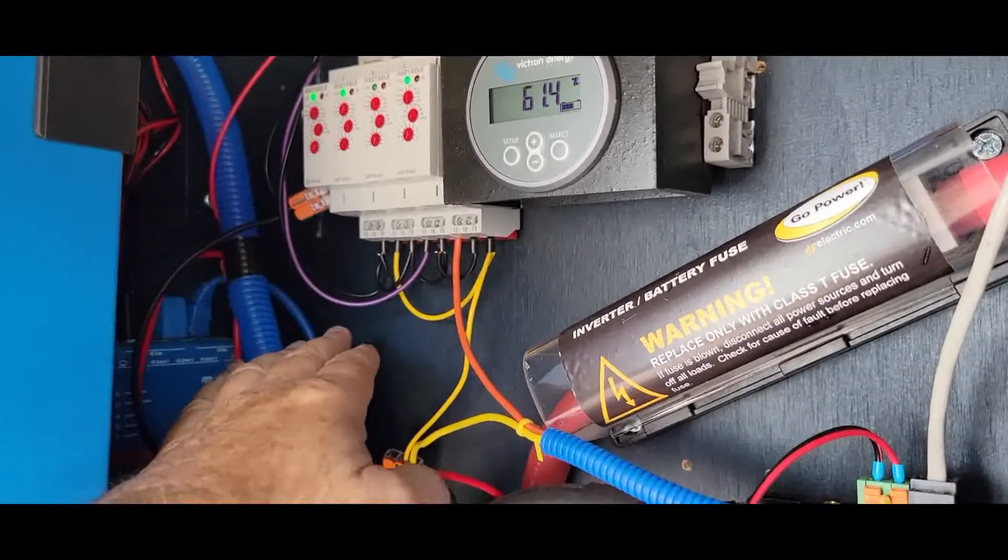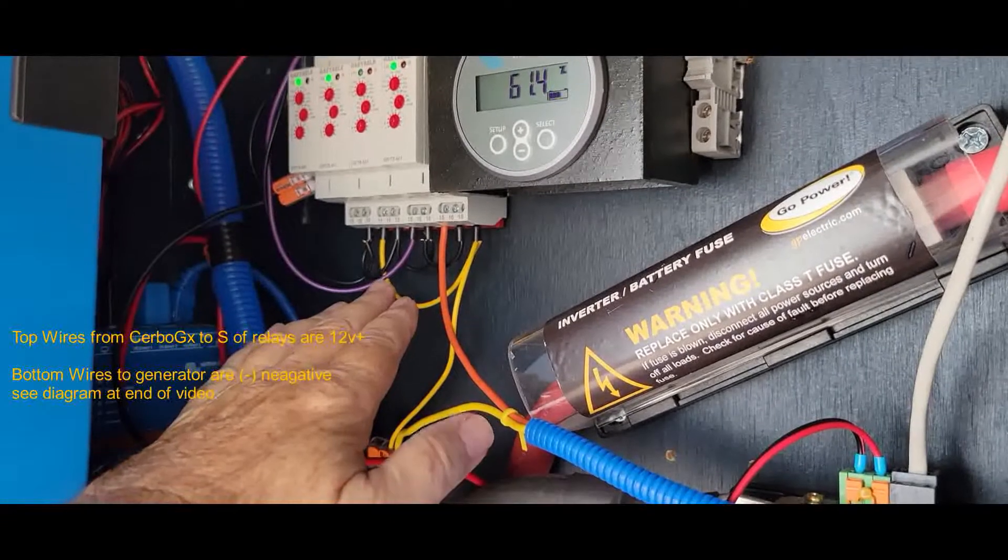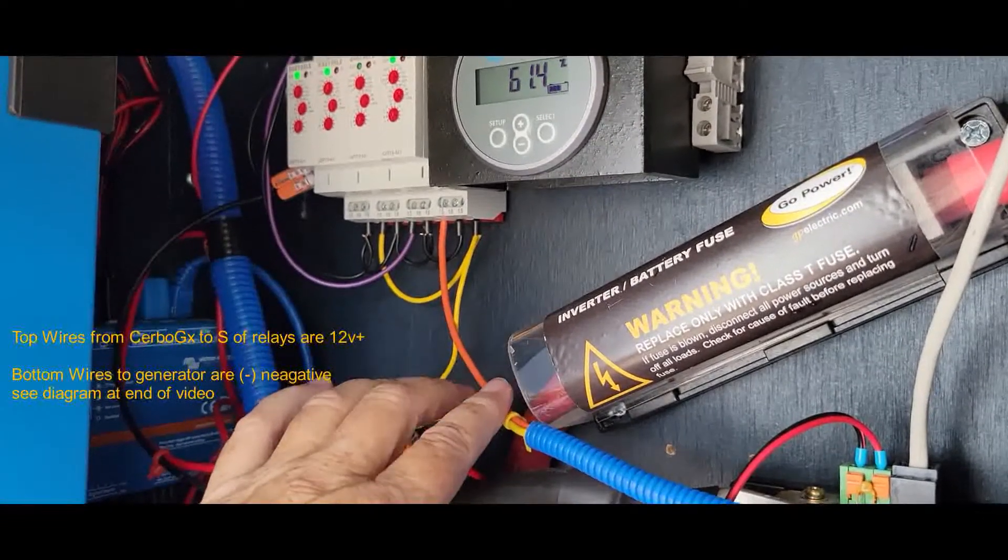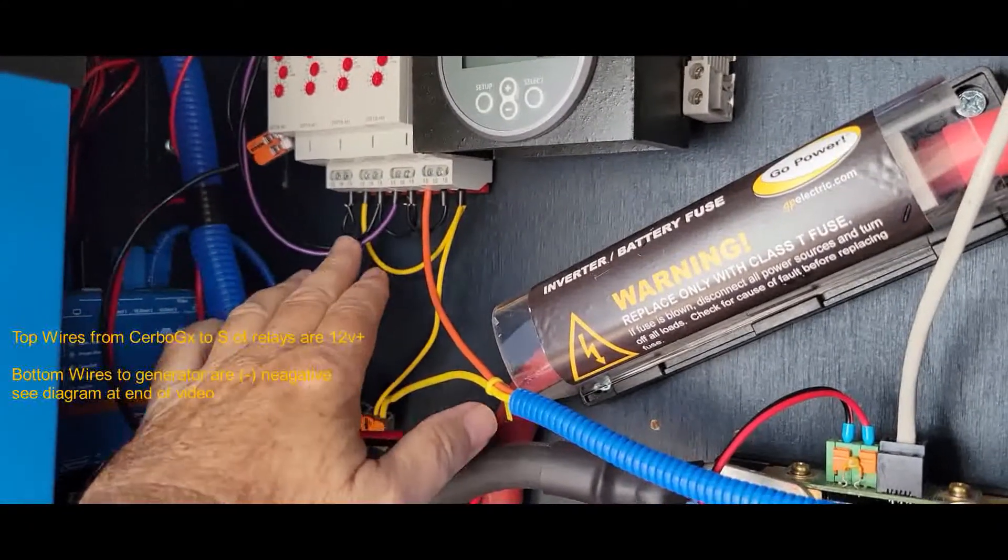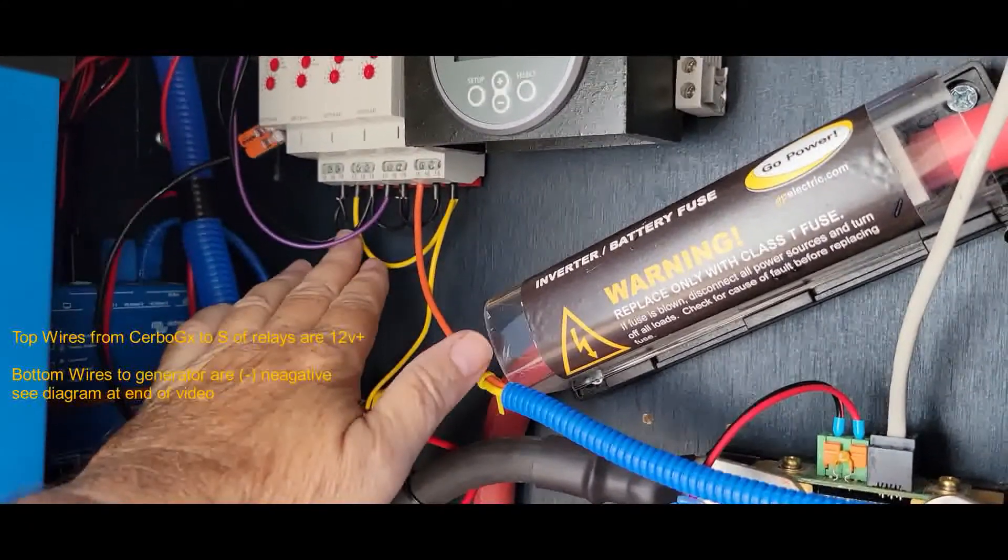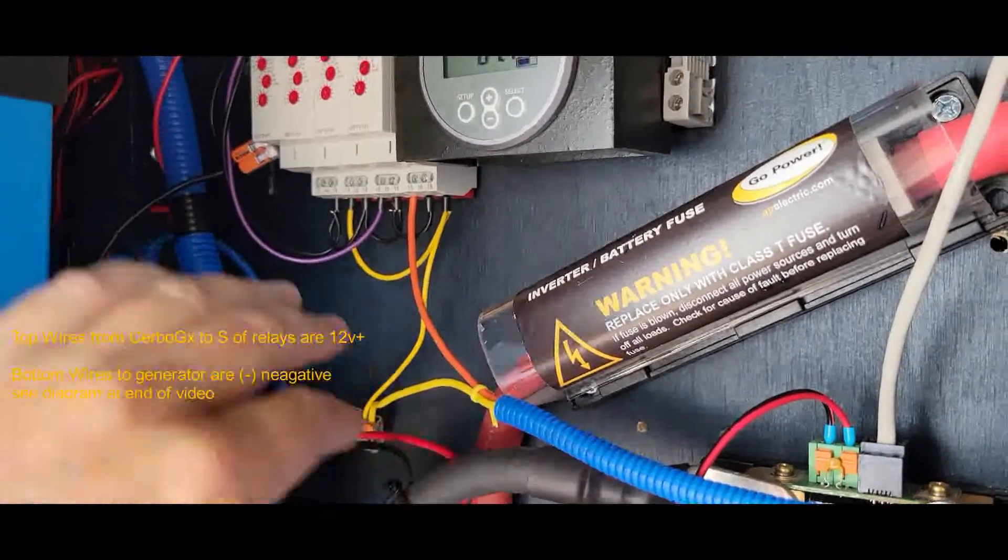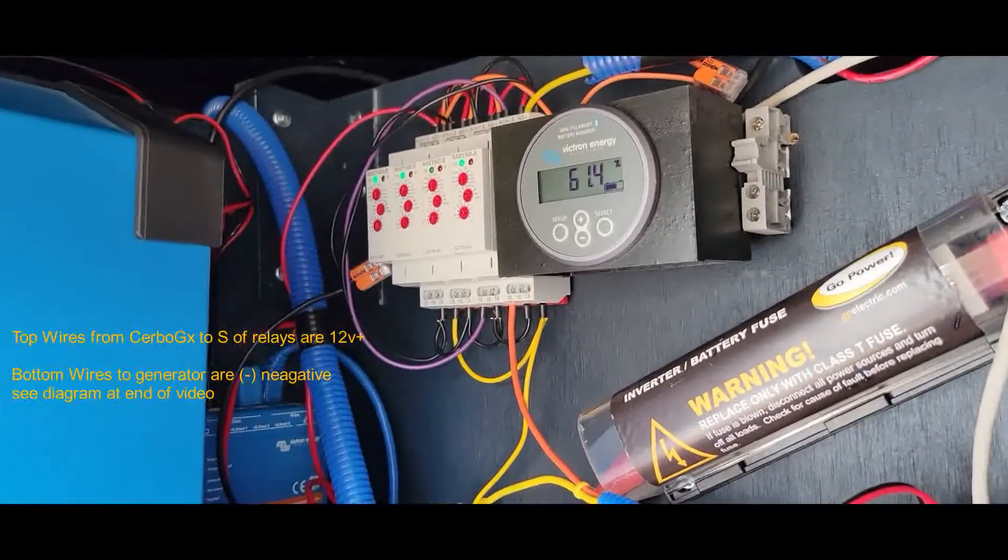And the source of the signal to the generator is a ground. And that's why these are black. These are coming from my ground bus bar, so it's ground. There's no 12 volt power going into the signal for the generator at all.